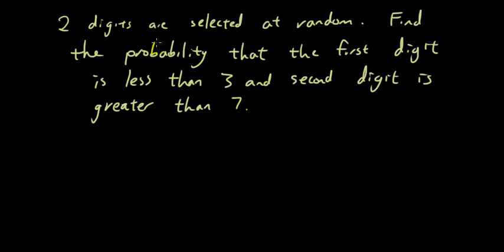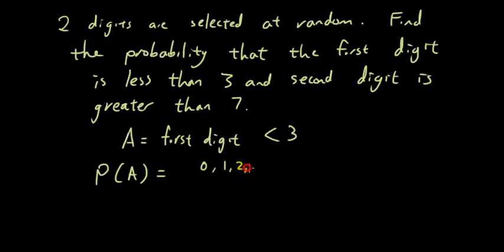Okay, let's look at this example. Two digits are selected at random. Find the probability that the first digit is less than 3 and the second digit is greater than 7. So event A would be the first digit less than 3. So what is the probability of A? Well, out of the 10 numbers, so out of 0, 1, 2, 3, 4, and so on, how many numbers are less than 3?